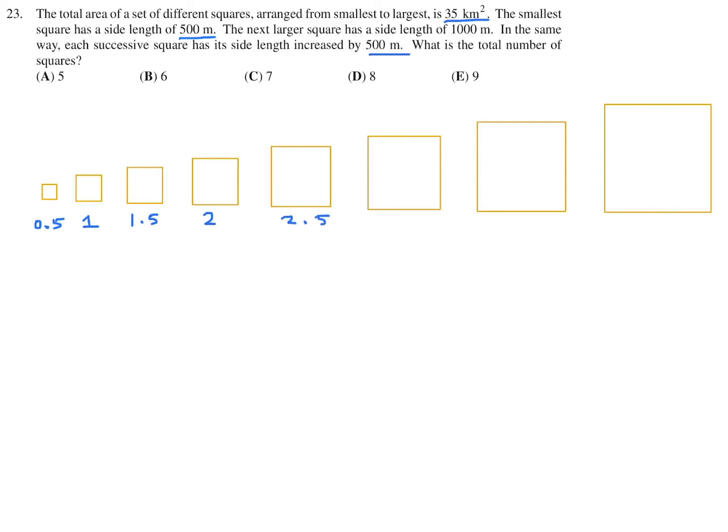They've said that when you add up the areas of a bunch of these, the total area is 35 kilometers. So this means that this square, which has an area of 0.5 times 0.5, plus this one, plus this one, plus this one, and so on, eventually it'll be equal to 35. So what I'll do is I'll write them all out so far, and let's see how far we need to go in order to get a sum of 35.